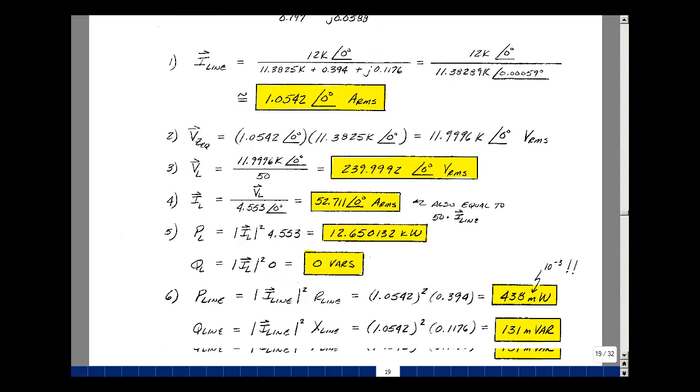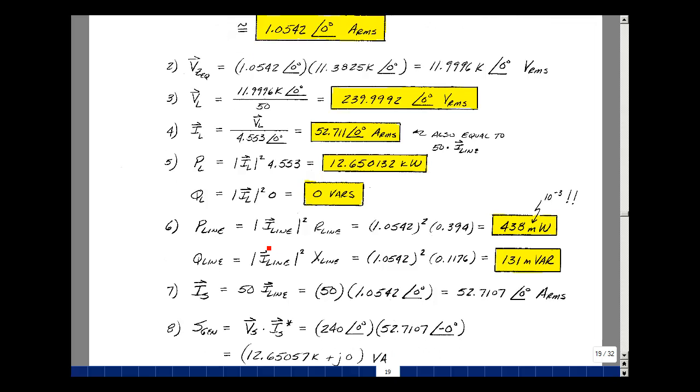Now the power that's dissipated in the wires is going to be the magnitude of the current squared times the resistance of the wires. Again, one going, one coming. But now that current is about 50 times smaller. It's 1.0542. So now we're only dissipating 438 milliwatts in the wires. We had nearly 1,000 watts in the wires when we started.